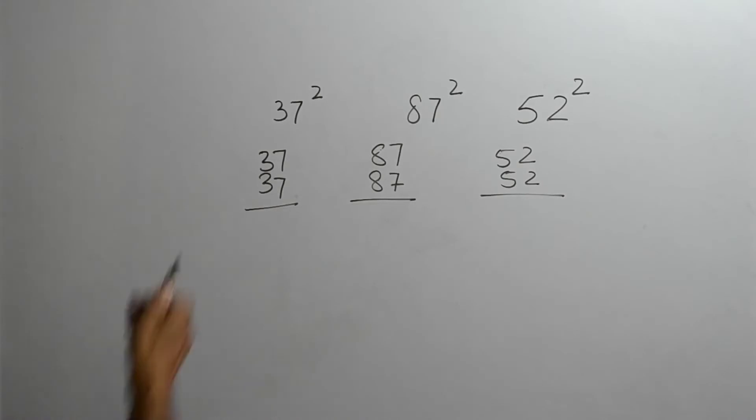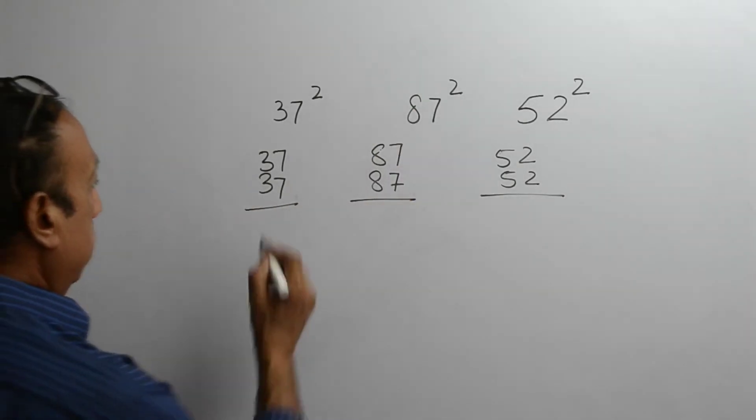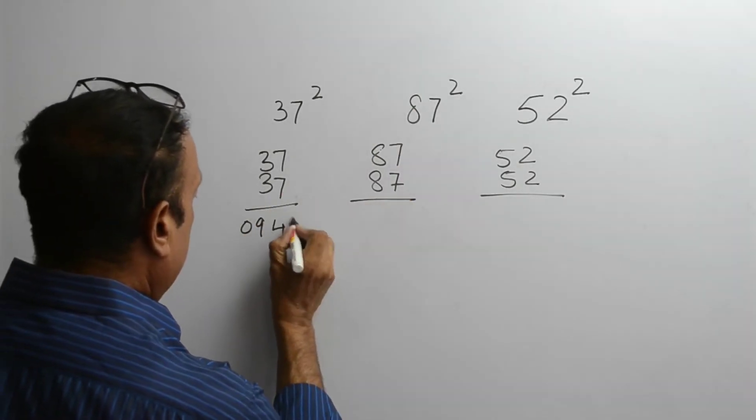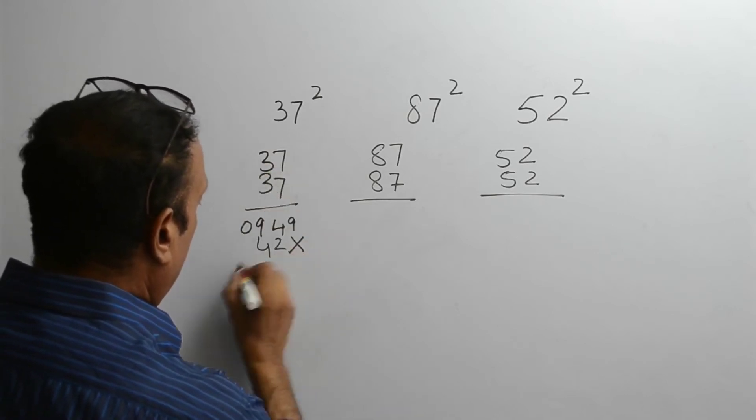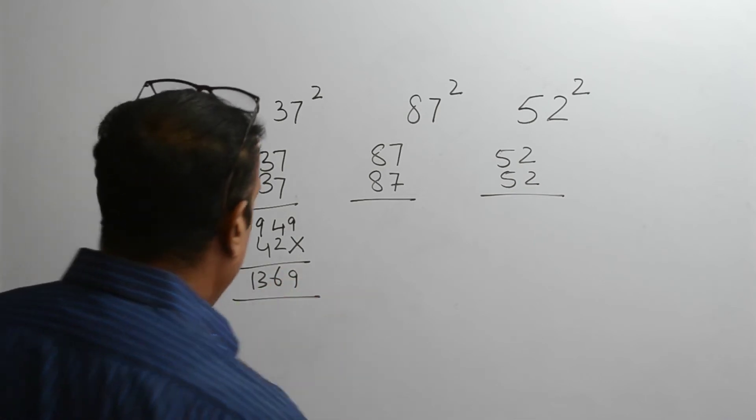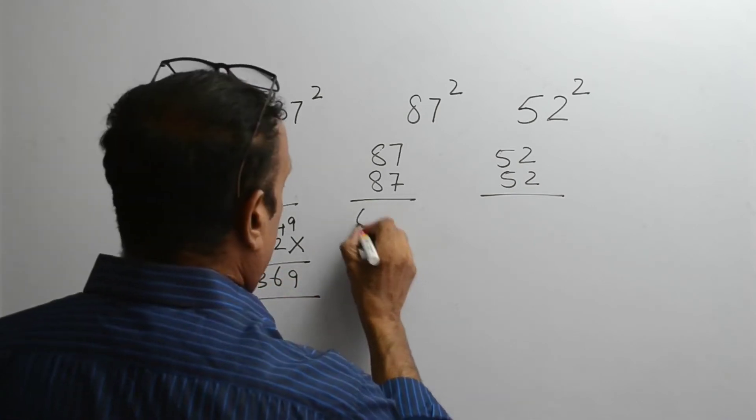Now, let us solve these problems. 09, 49, cross 21, 21, 42, so 96, 13, so 1369.